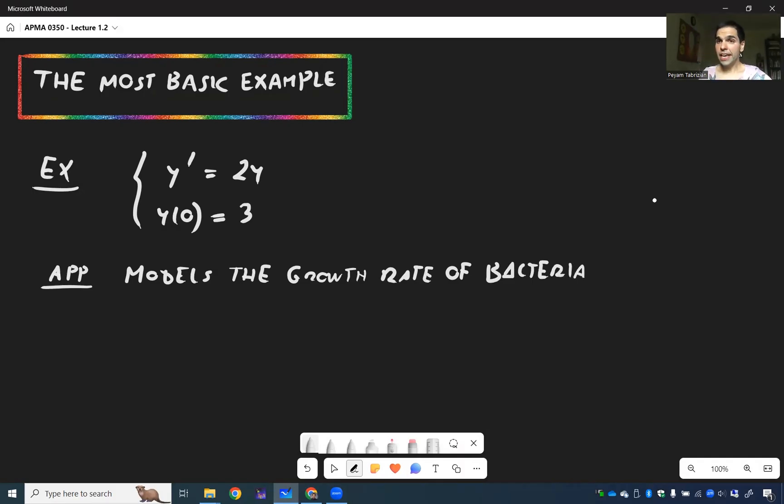Because essentially what this says is, the more bacteria there are, so the bigger y is, the bigger the rate of change. So essentially bacteria, they multiply so quickly that it's modeled by this differential equation, that the rate of change is 2 times the number of bacteria.